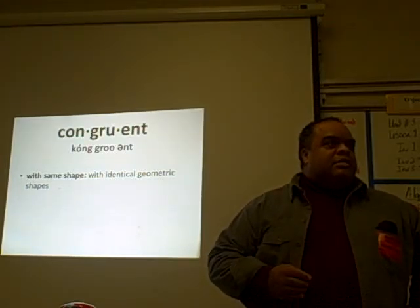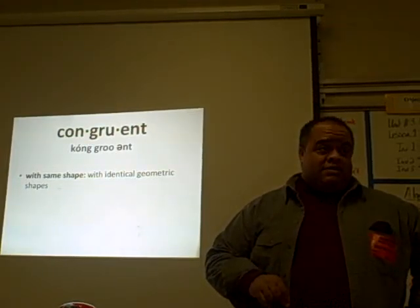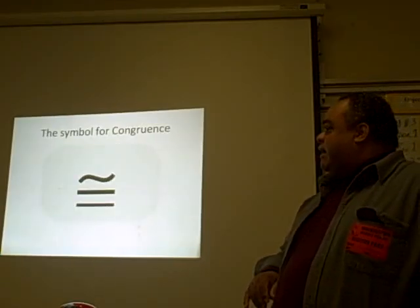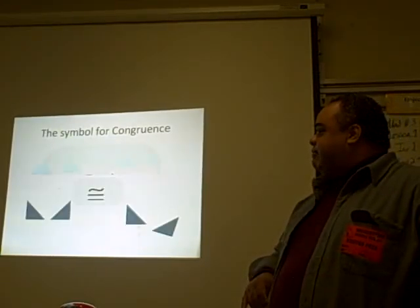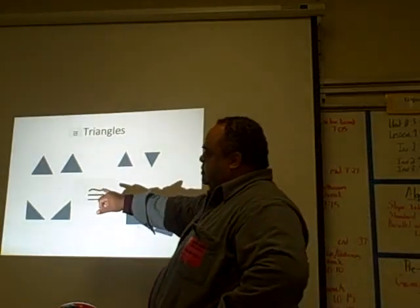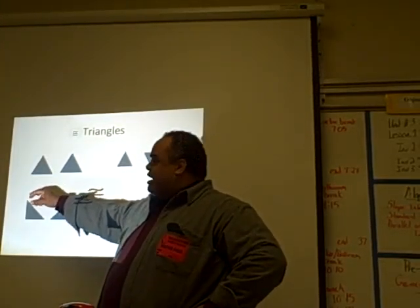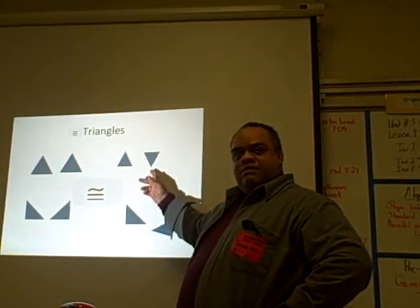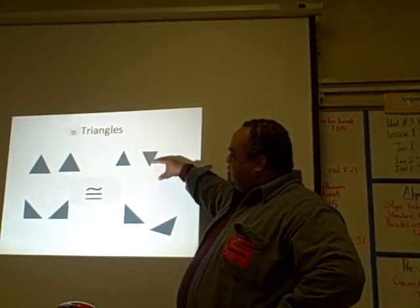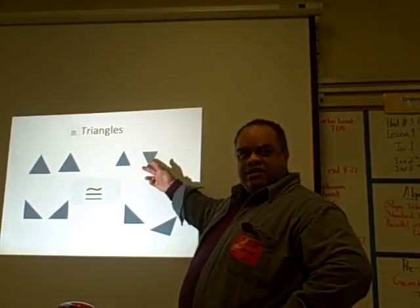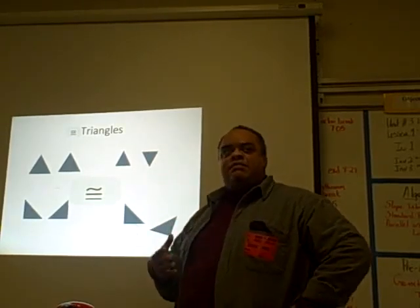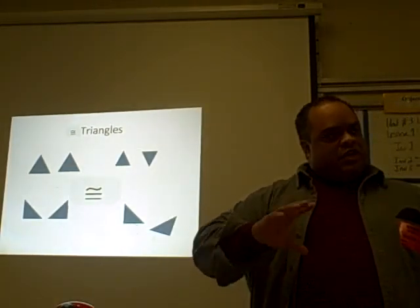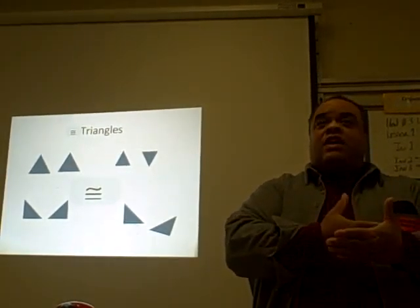But today we're going to talk about congruent triangles and how we tell that two triangles are congruent. If you see these two triangles right here, they're identical — same angles, same size. These are also the same, but they're turned differently. But if you can rotate this one, or flip it, it's still the same thing. So the most important part of being congruent is that you can have two separate shapes, and if you can turn one so it fits on top of the other one, they're congruent.